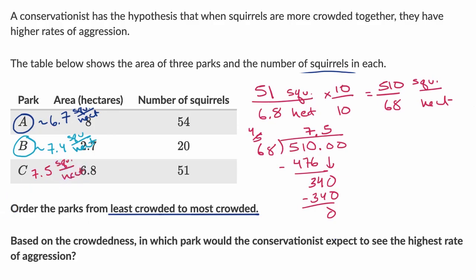What's the most crowded? The most crowded is park C. The second crowded is park B. The third most crowded is park A. Based on crowdedness, in which park would I expect the highest rate of aggression? Park C. The squirrels are much closer to each other. They might be fighting over things. We answered the question.